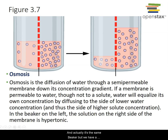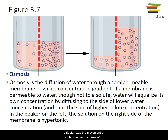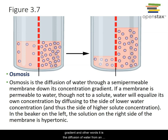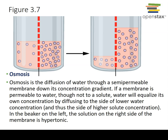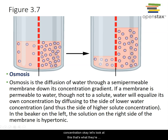Osmosis is a type of diffusion but with two key differences. Regular diffusion is the movement of molecules from higher to lower concentration across a concentration gradient. Osmosis is specifically the diffusion of water through a semi-permeable membrane down a concentration gradient — from an area of higher water concentration to an area of lower water concentration. If the membrane is permeable to water but not to the solute, water will equalize its own concentration by diffusing to the side of lower water concentration — and thus higher solute concentration.